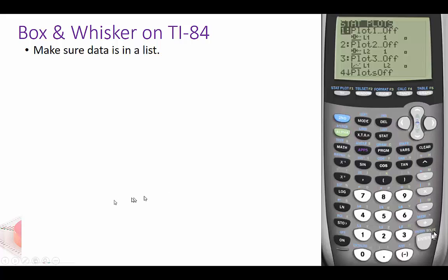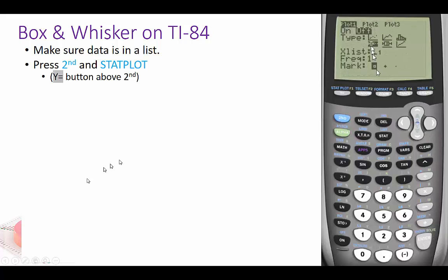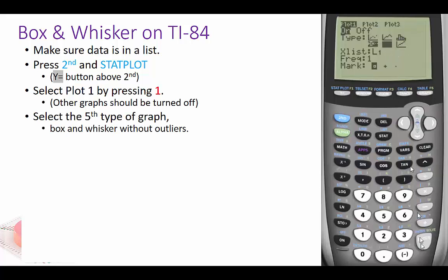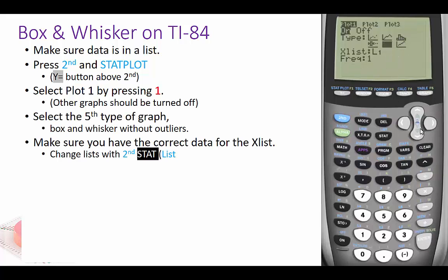Now you hit second stat plot, and then you make sure that plot 1 is turned on. All other graphs should be turned off, and then you go to the fifth type of graph, which is box and whisker without outliers.